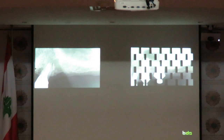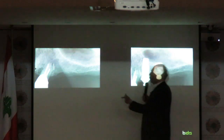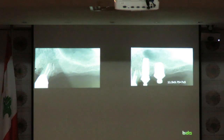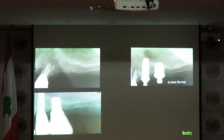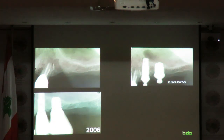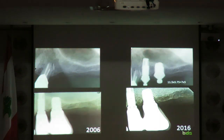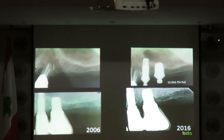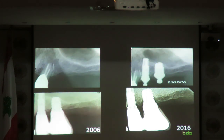Again, another situation with little bone and a sinus — would you do a sinus lift, internal or external? We used an 11.5 x 3.75 and a 7 x 5 implant. From 2006 to 2016 — we know it works. By using these short implants in bone of good quality, which is really important, we can expect on the long term to have equal results as if we had done advanced surgeries.